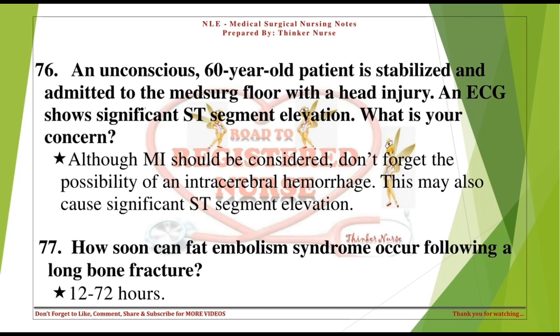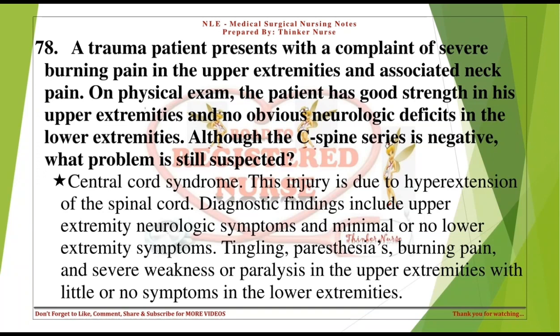How soon can fat embolism syndrome occur following a long bone fracture? 12 to 72 hours. A trauma patient presents with severe burning pain in the upper extremities and neck pain. On physical exam, the patient has good strength in the upper extremities and no obvious neurologic deficits in the lower extremities. Although the C-spine series is negative, Central Cord Syndrome is still suspected — due to hyperextension of the spinal cord, causing upper extremity symptoms including tingling, paresthesias, burning pain, and weakness or paralysis with little or no lower extremity symptoms.